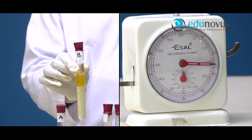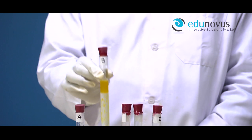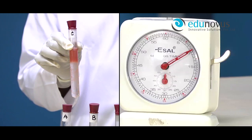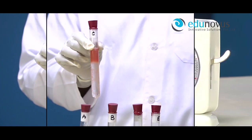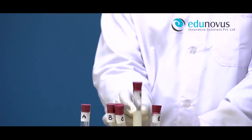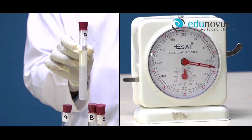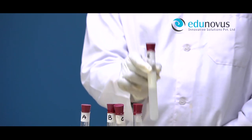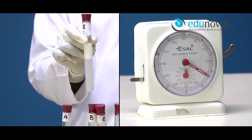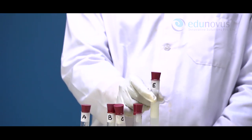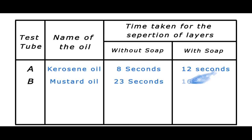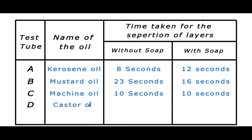Time taken by test tube B containing mustard oil is 16 seconds, test tube C containing machine oil is 10 seconds, test tube D containing castor oil is 17 seconds, and test tube E containing coconut oil is 22 seconds. Now tabulate the time taken for the two layers to separate in each case — that is, without soap and with soap.